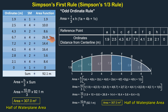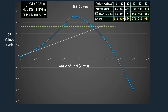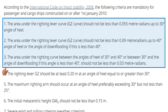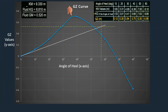We will use this tabular approach for our next exercises. Before proceeding with the calculation of the area under the GZ curve, let's first review the stability criteria established by the IMO. These criteria are mandatory for passenger and cargo ships constructed on or after 1 January 2010. We will focus on the first three stability criteria, as they specifically relate to the area under the GZ curve. I used KN values to determine the GZ values and plotted the GZ curve using an Excel sheet.